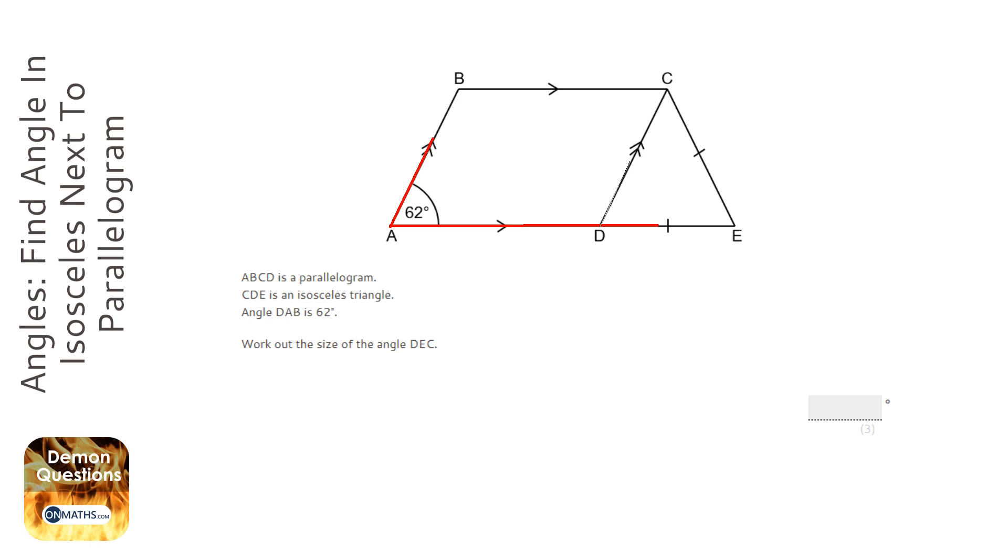then you can see that they are angles in parallel lines. We're looking at the two red ones going diagonally. We're ignoring the bottom parallel line because we're not using the top one for this.